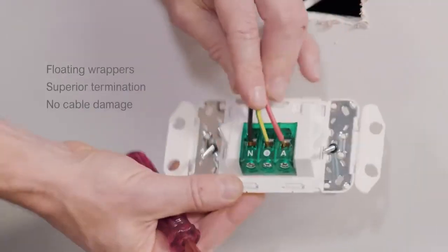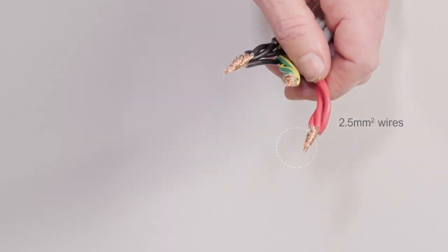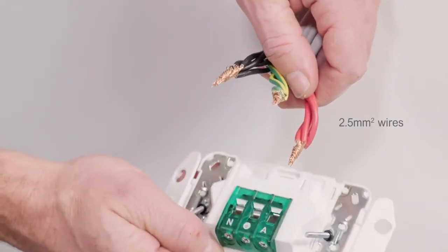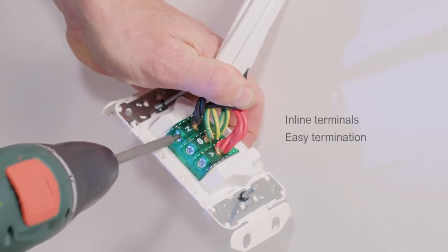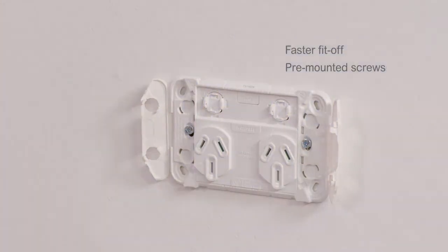Floating wrappers offer superior termination. The terminals take up to 4 2.5mm wires, plus they're in line for easy termination. And the pre-mounted screws help you fit off faster.